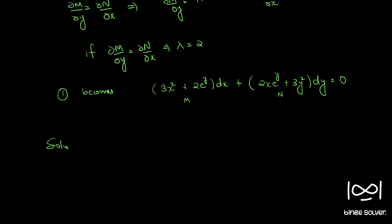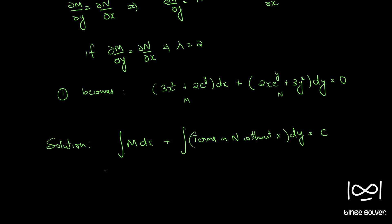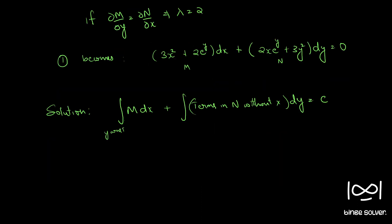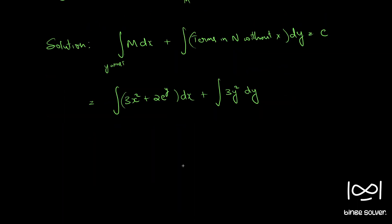We know that this equation is exact. So the solution becomes: integral of M dx + integral of terms in N without x dy = constant, treating y as constant. That gives integral of (3x² + 2e^y) dx + integral of 3y² dy = c.